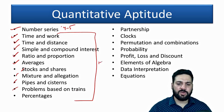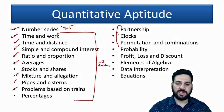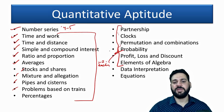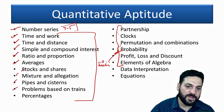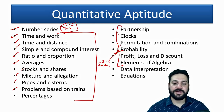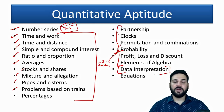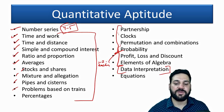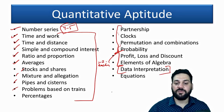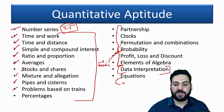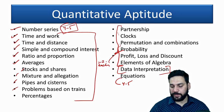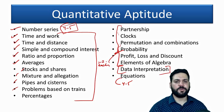You can expect one to two questions from each of those topics. Data Interpretation will have two to three sets. Linear and Quadratic Equations may appear with four to five questions. Data Sufficiency is also possible. The overall pattern is quite similar to IBPS PO and SBI PO level exams.